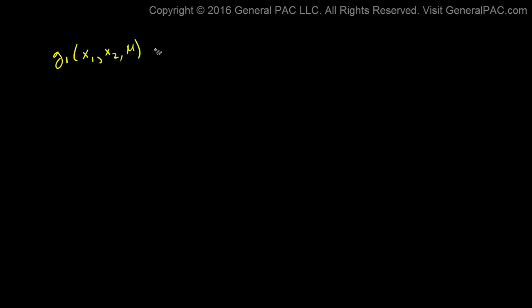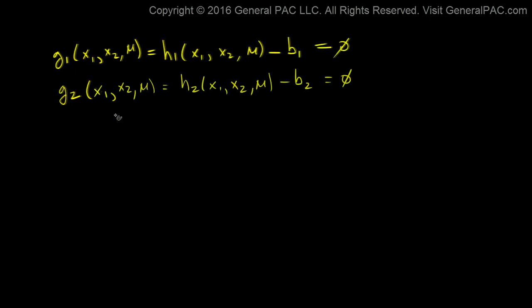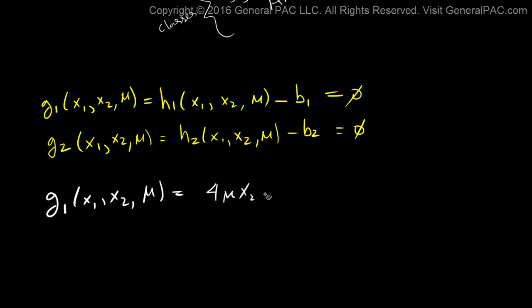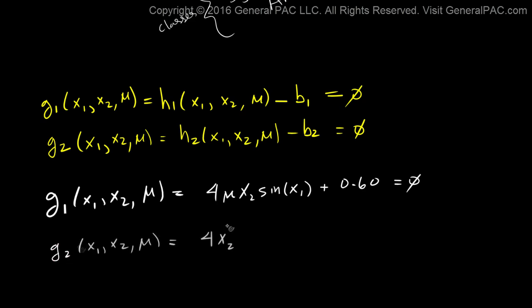This is going to be an example-based tutorial. The first equations presented are: g1 of x1 is equal to h1 comma u, g2. Initially these are the two equations presented in example 9.4 of the book. We're also presented with g1 equal to 4 times u times x2 times sine of x1, equal to 0, and g2 equal to 4x2 squared minus 4u x2 cosine of x1, equal to 0.